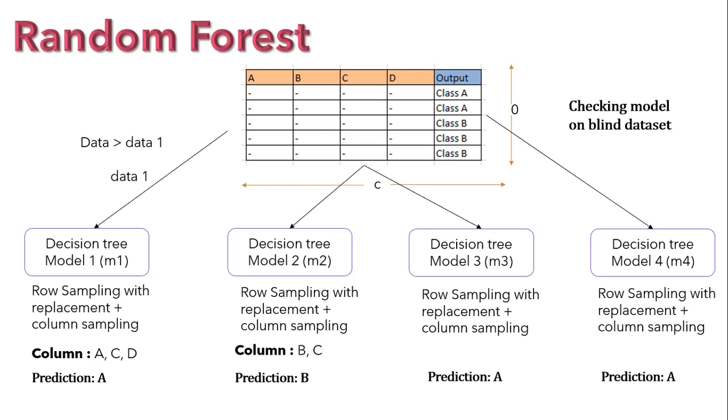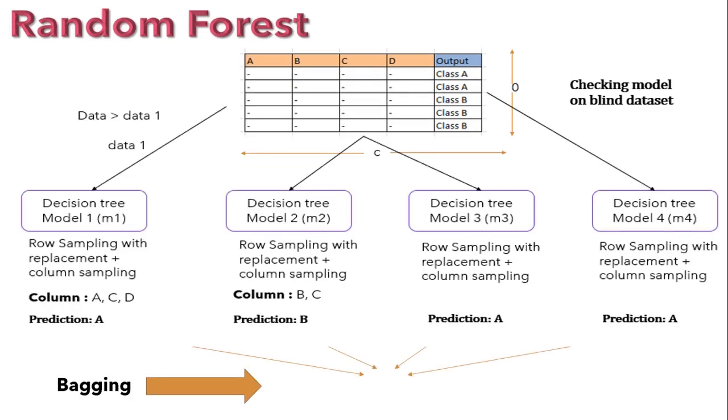So guys, by making use of bootstrap, we have model predictions based on different decision tree models. Now what we will do is we make an aggregation or bagging of all these model outputs by taking majority votes for target class.